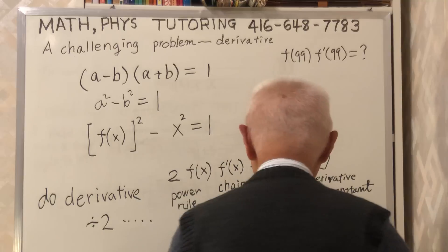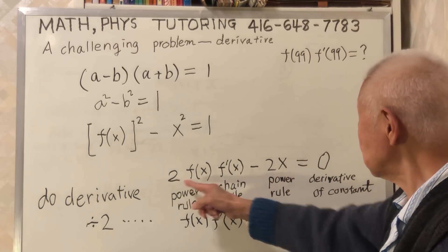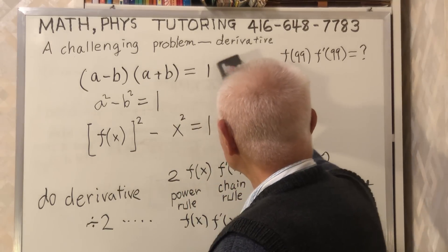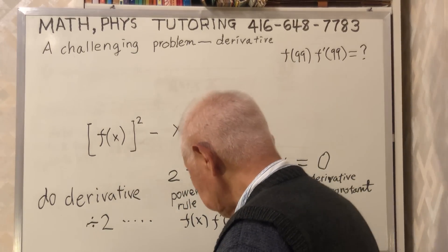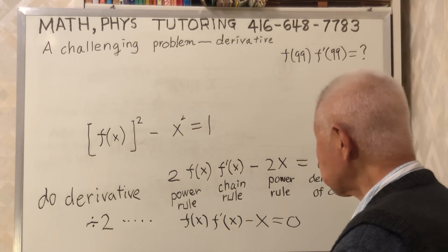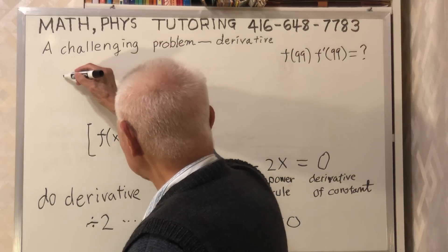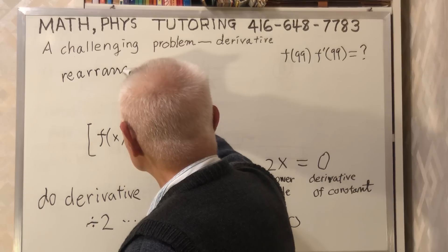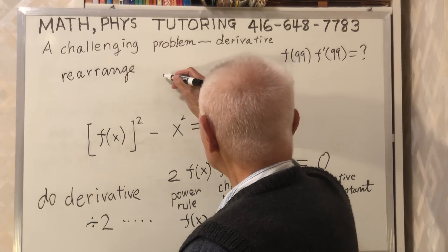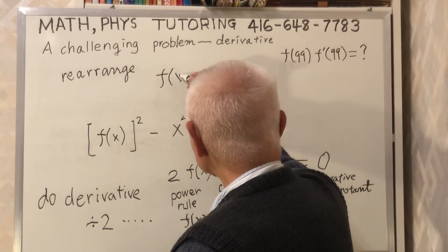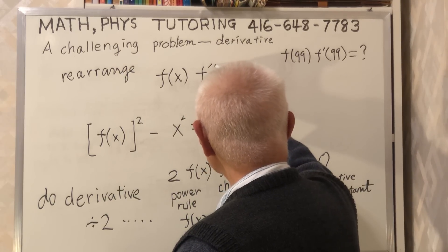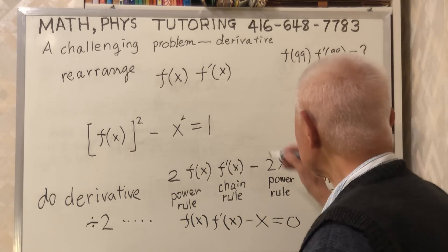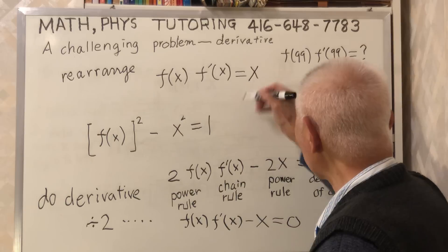So I have the power rule and chain rule terms, and this one is only power rule, and this is zero because the derivative of a constant is zero. Now I have a 2 and a 2, so I divide both sides by 2 to simplify. Dividing by 2, I have f(x) times f'(x) minus x equals zero.